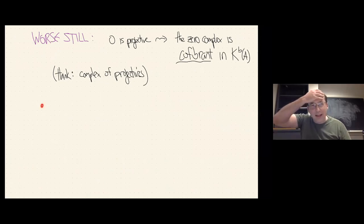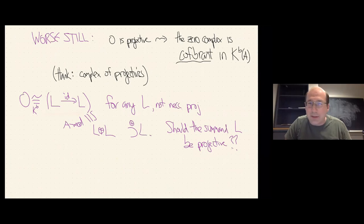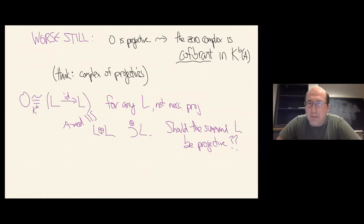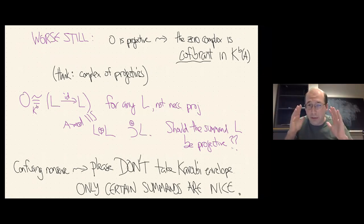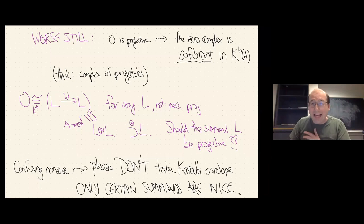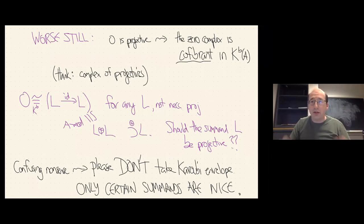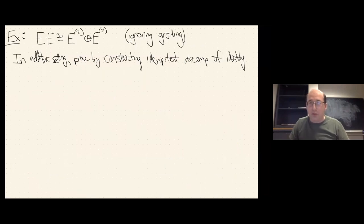Worst still, zero is a projective object, but in the homotopy category, zero is the same as any contractible complex L ⊕ L. If you were looking at something that is L ⊕ L and decided to take A-module summands of it, you might introduce L which shouldn't really be there. You can't just take the Karoubi envelope and expect it to respect PDG structures, SL2 structures, or DG algebra structures. You can put a differential on the Karoubi envelope of a DG category, but it won't give you a Morita equivalent theory. You should only allow certain summands — those that appear in nice filtrations of objects.